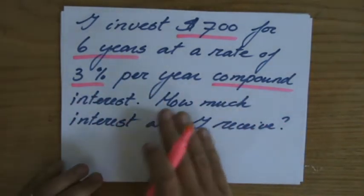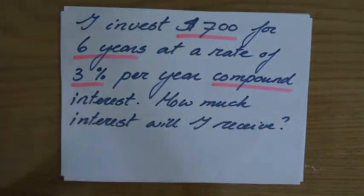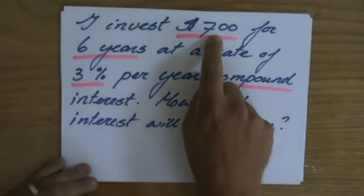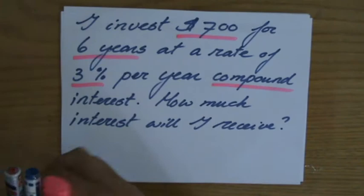They're asking me how much interest will I receive. So not how much money will I have, but how much interest will I receive. So $700 for six years, 3% per year compound interest.